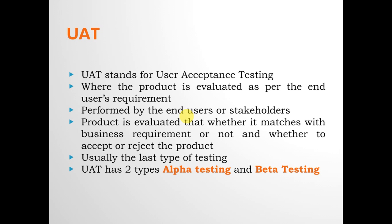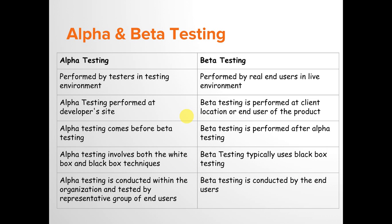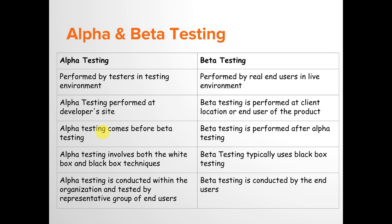Alpha testing is performed by a dedicated test team representing the end user, while beta testing is performed by actual end users — as seen with apps or websites labeled as beta versions. Alpha testing is performed in a testing environment at the developer's site, while beta testing is performed in a live environment at the client's or end user's location. Alpha testing comes before beta testing, involves both white box and black box techniques, and is conducted within the organization. Beta testing typically uses black box testing and is conducted by the end users.